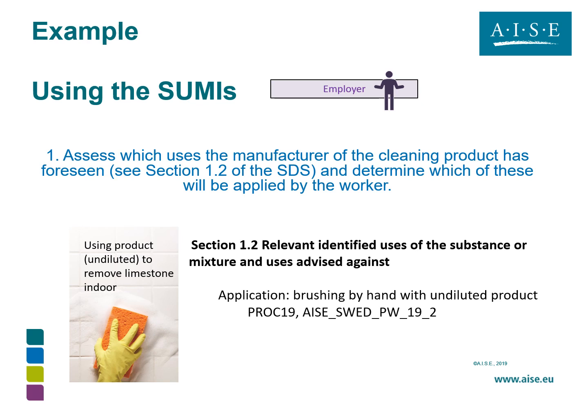Firstly, they will assess which uses the manufacturers of the cleaning product has foreseen by going to section 1.2 of the safety data sheet, and they will determine which of these will be applied by the worker. In this case they would find: application brushing by hand with undiluted product, the AISC SUED PW19-2.